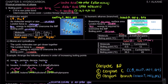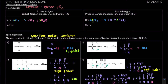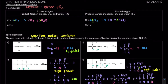Previously, we have learned about the chemical properties of alkane where the alkane will undergo halogenation. For the halogenation, the alkane will react with halogen in UV condition where the hydrogen will be replaced or substituted with the halogen. For example, here we have our hydrogen being replaced with our chlorine. So that is the basis of halogenation.